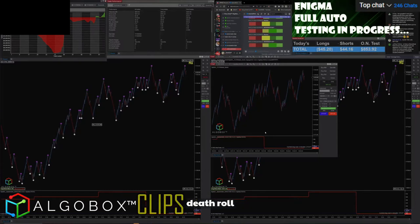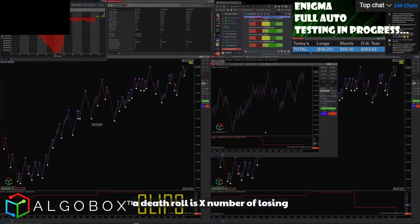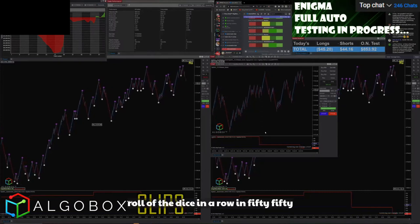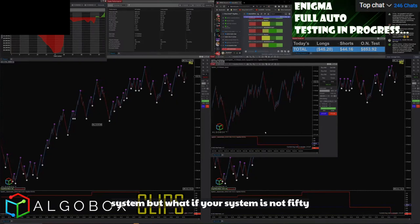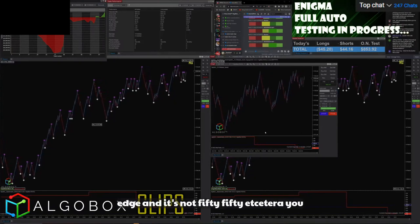What's the death roll? Okay, we call it the death roll. A death roll is X number of losing rolls of the dice in a row, in a 50-50 system. But what if your system is not 50-50? What if you build in inherent edge and it's not 50-50?